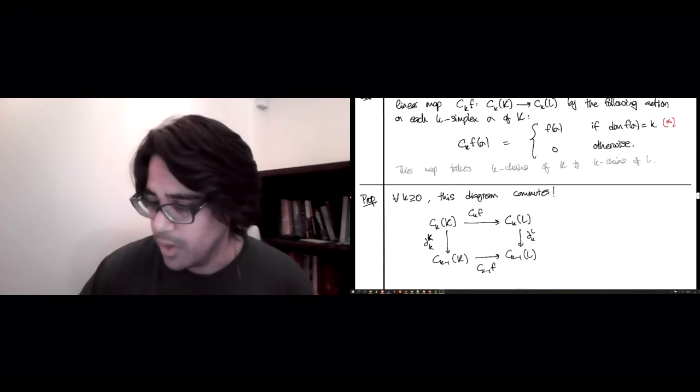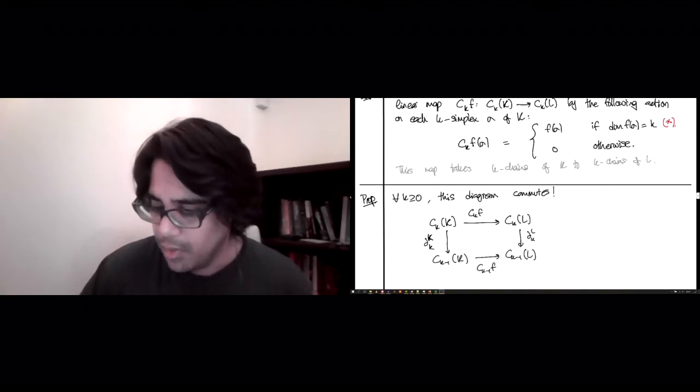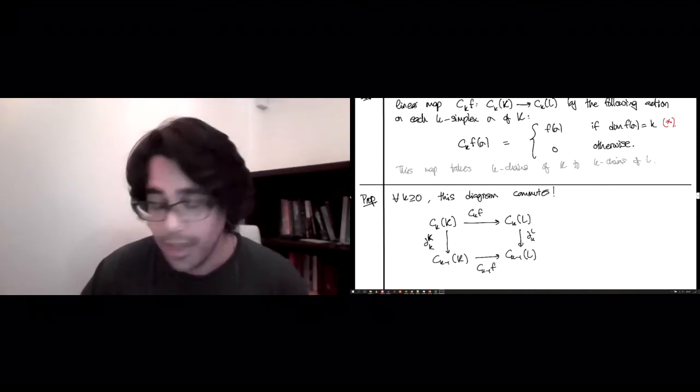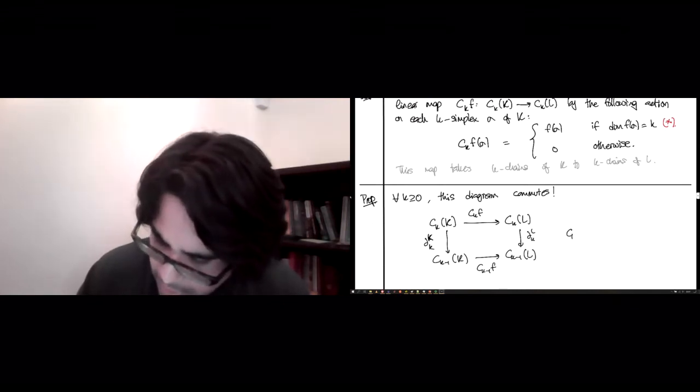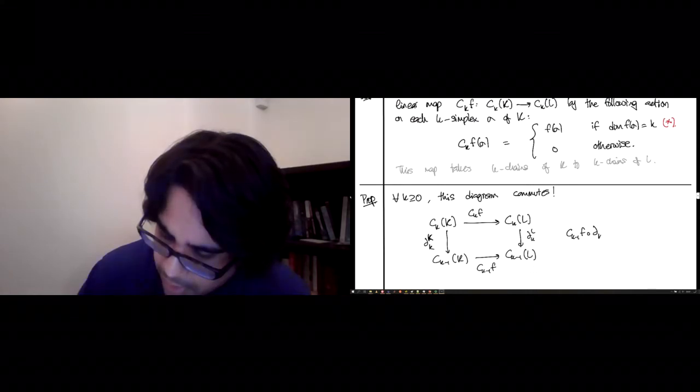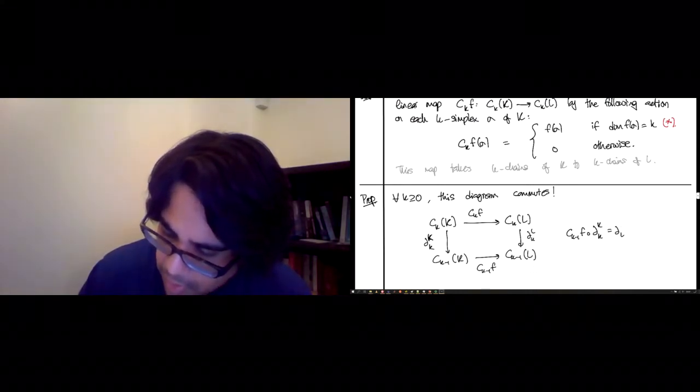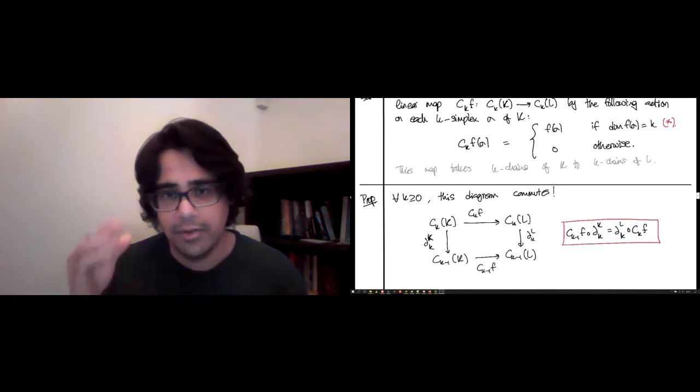And if this way of phrasing things bothers you, and that's fine if it bothers you the first time you see it, we can write it down in nice and algebraic fashion. So here it is, c_{k-1}(f) composed with the boundary operator of K is the boundary operator of L composed with c_k(f).